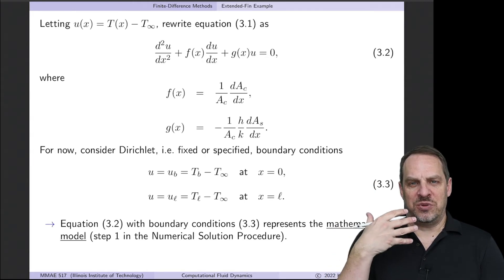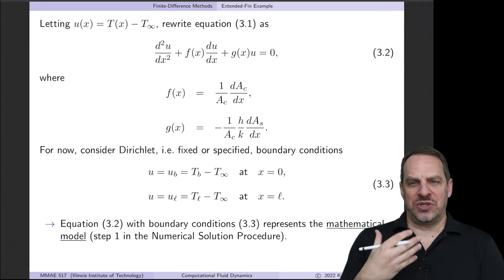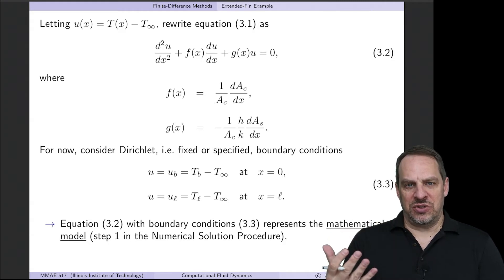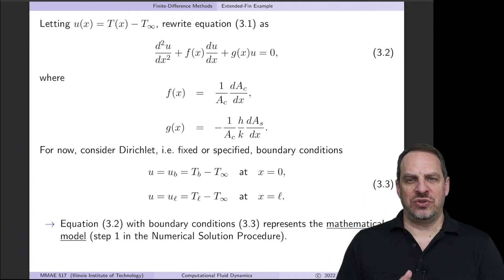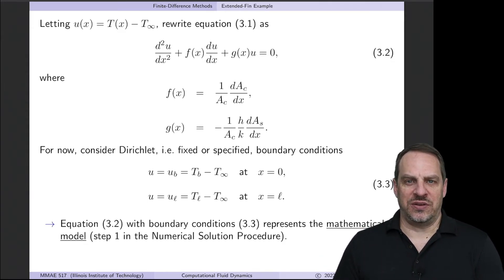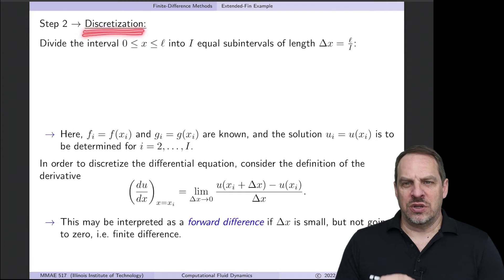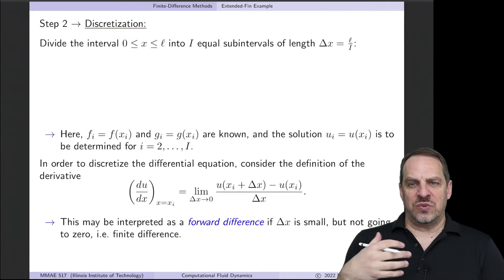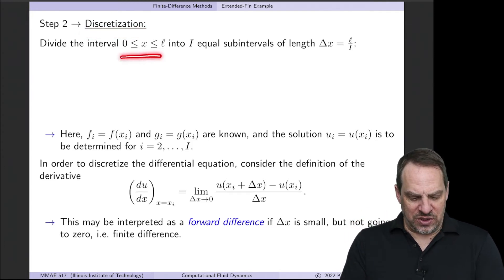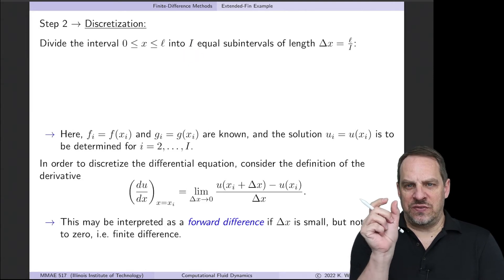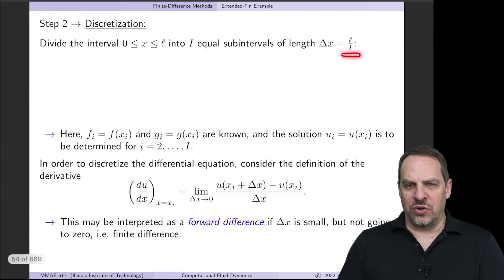Of course, we're going to use the numerical solution procedure here. The second step is to perform the discretization — we choose the numerical method, in this case finite differences. We take the length of the fin, x going from 0 to L, and divide it into capital I equal subintervals, so delta x = L/I.